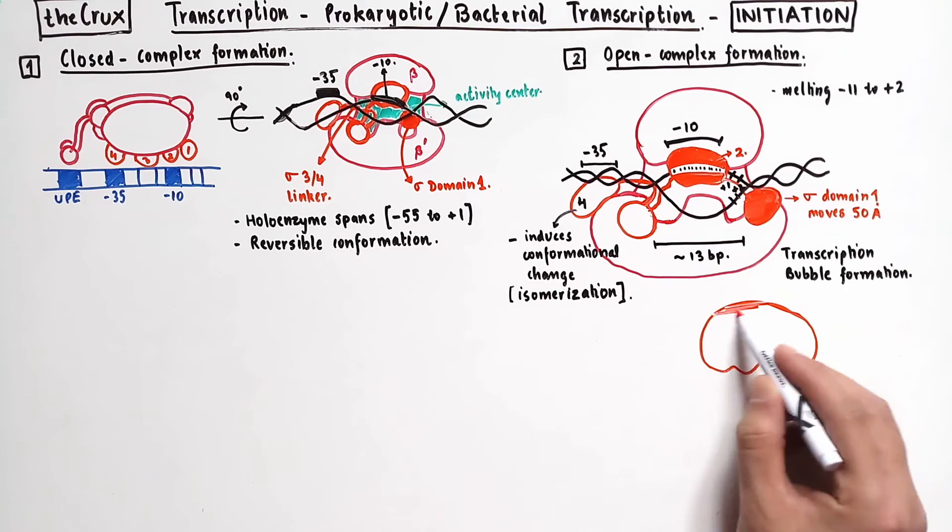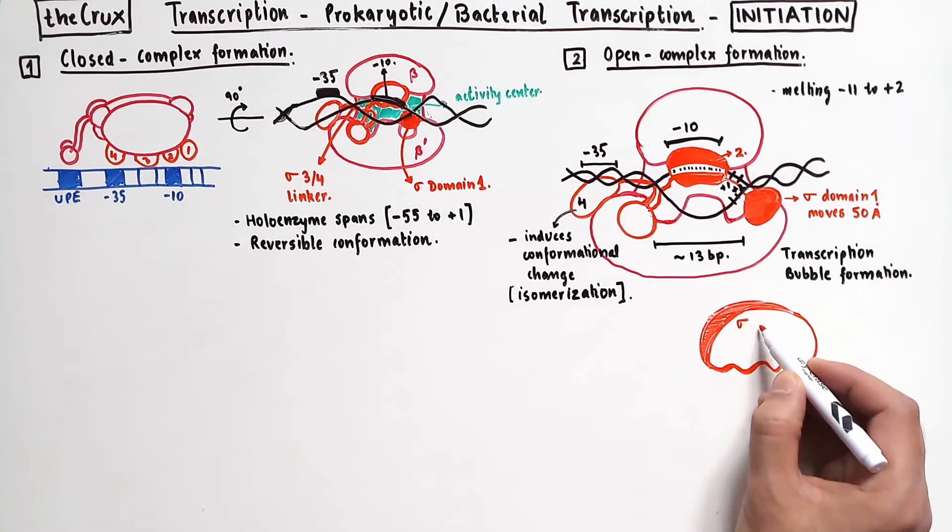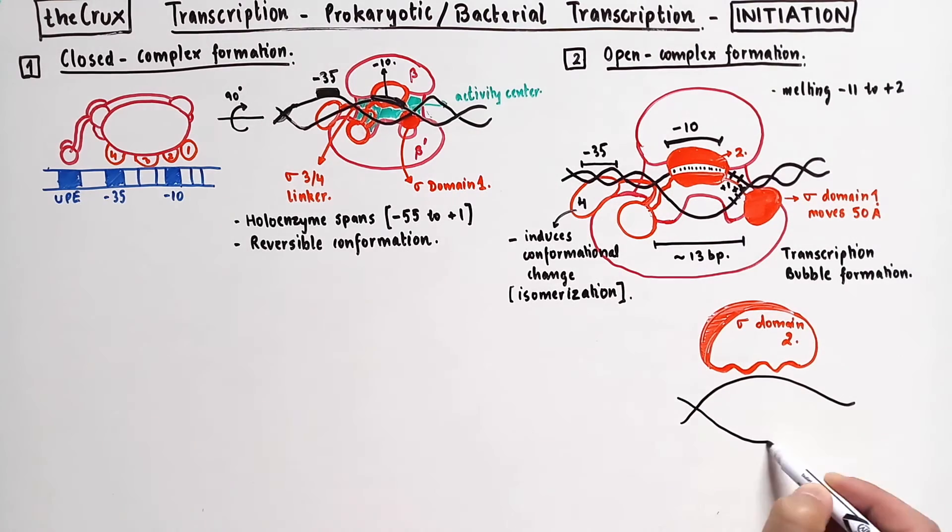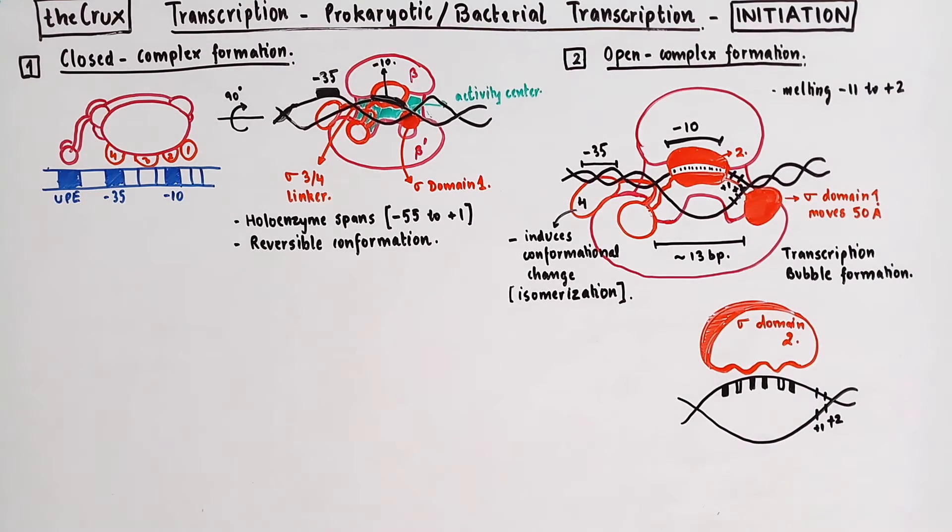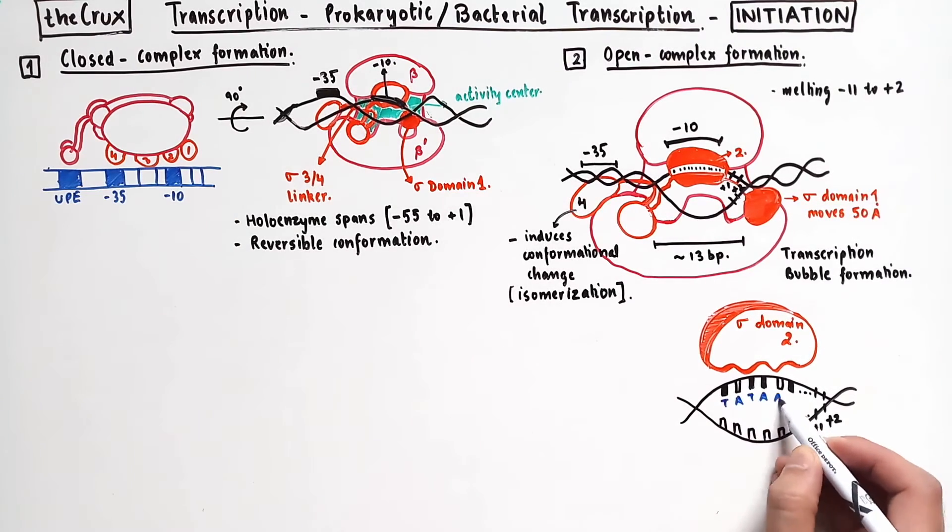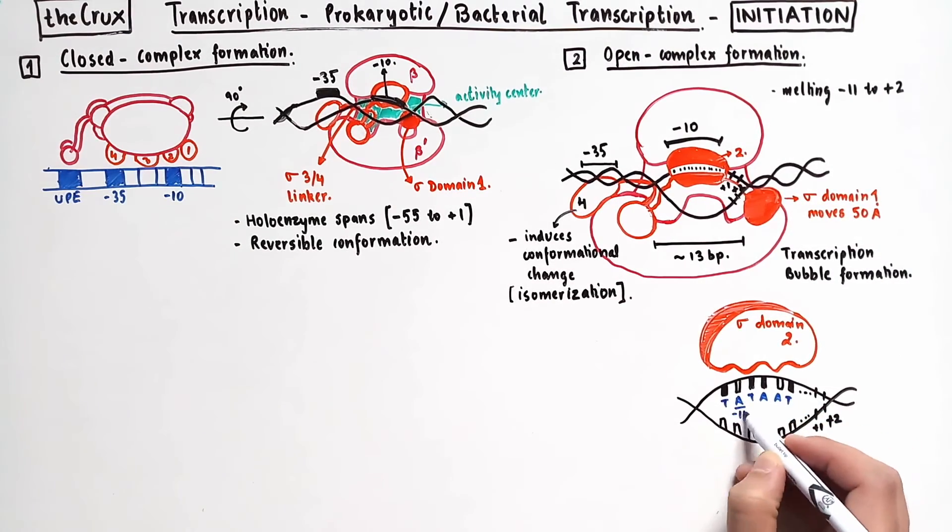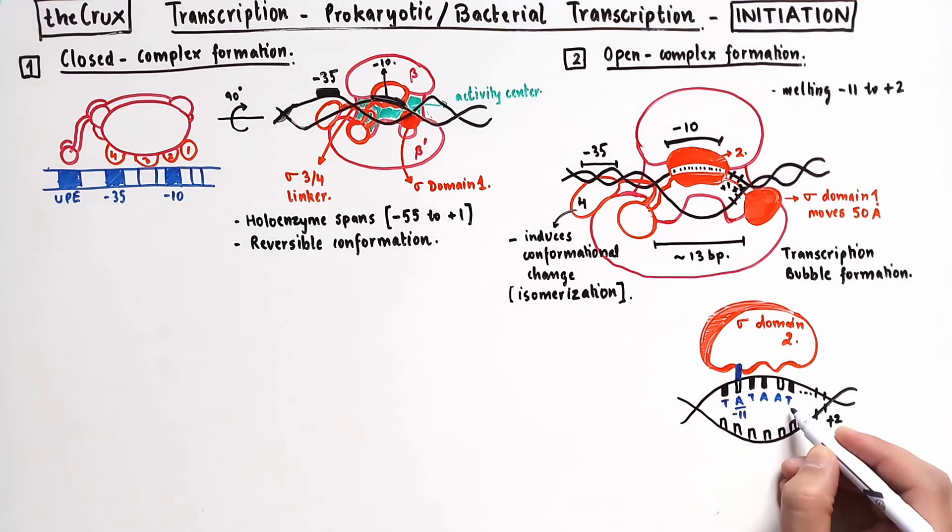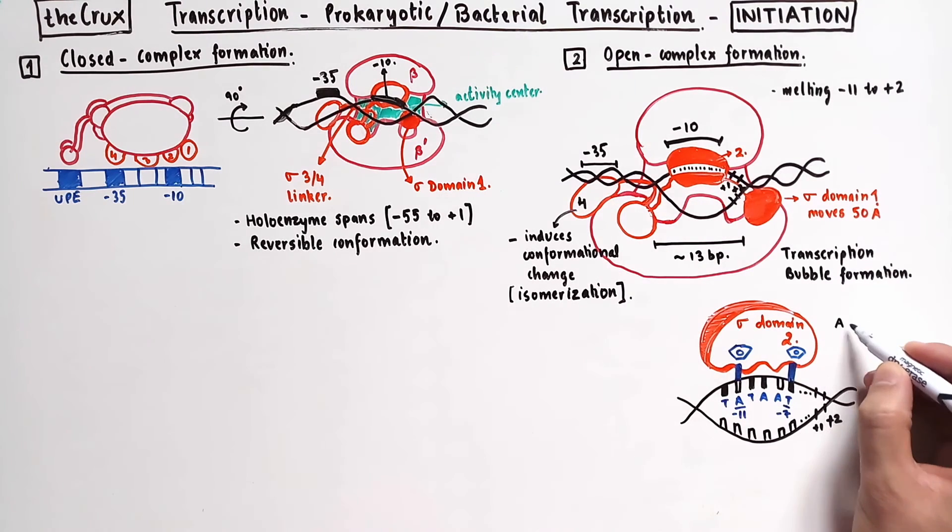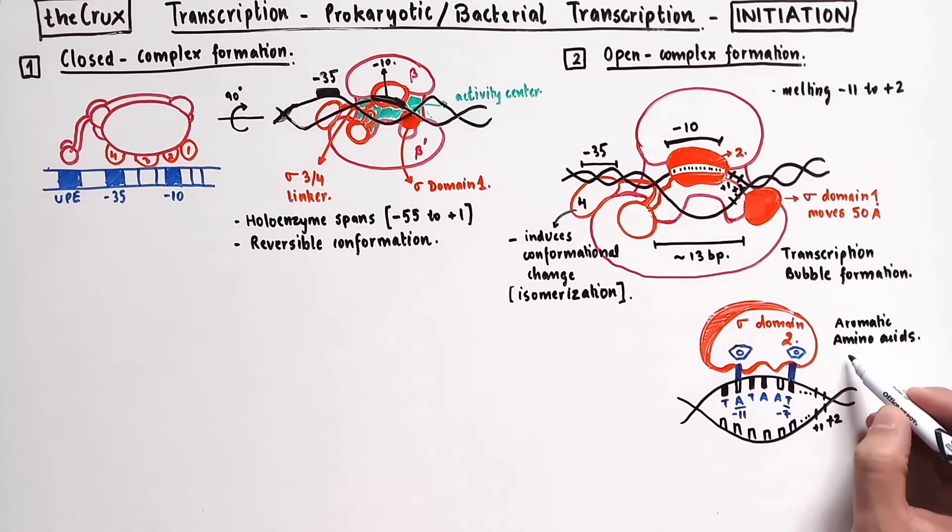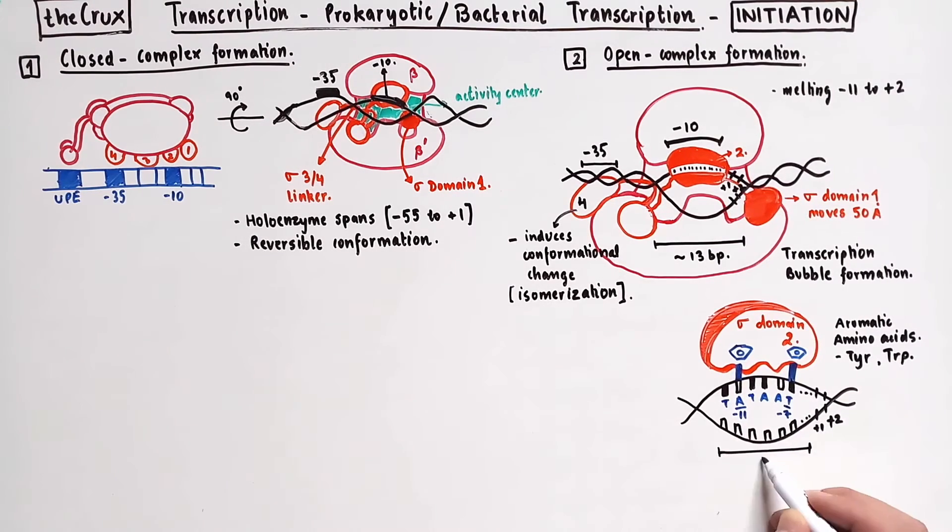Let's look at this transcription bubble in more detail. So our focus here is now on the domain 2 of the sigma factor and the 13 base pairs of DNA under it. If you recall our discussion on the promoter structure, the consensus for negative 10 element is TAT-AAT. In this transcription bubble, the adenine at position negative 11 and the thiamine at position negative 7 are flipped into the domain 2. This flipping mechanism is initiated by alpha helixes in domain 2 and specifically the aromatic amino acid like tyrosine and tryptophan are involved in this. So this 13 base pairs melt and the sigma factor domain 2 specific contact causes a conformational change in the holoenzyme.